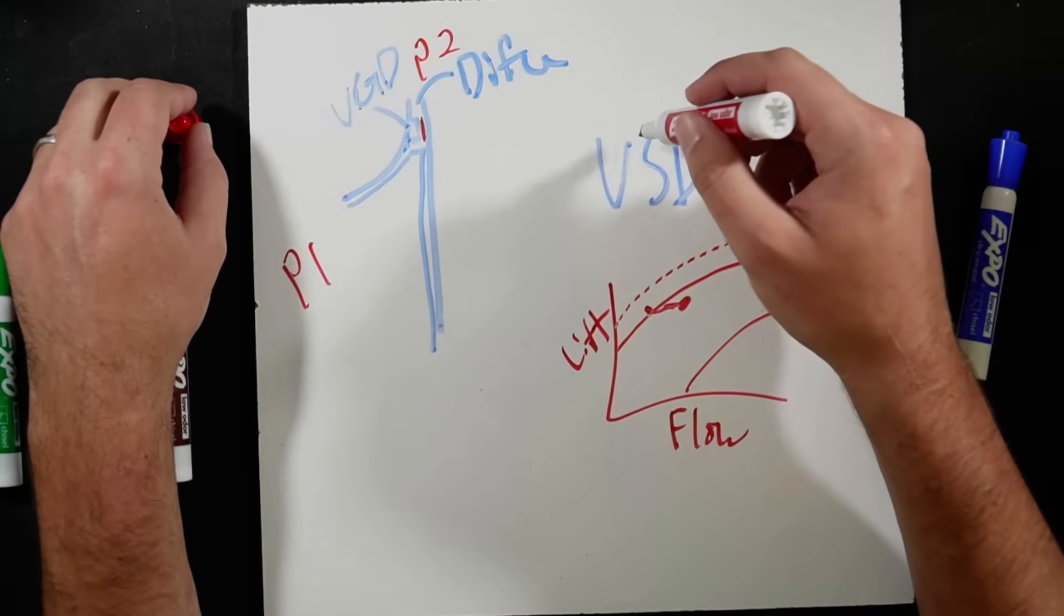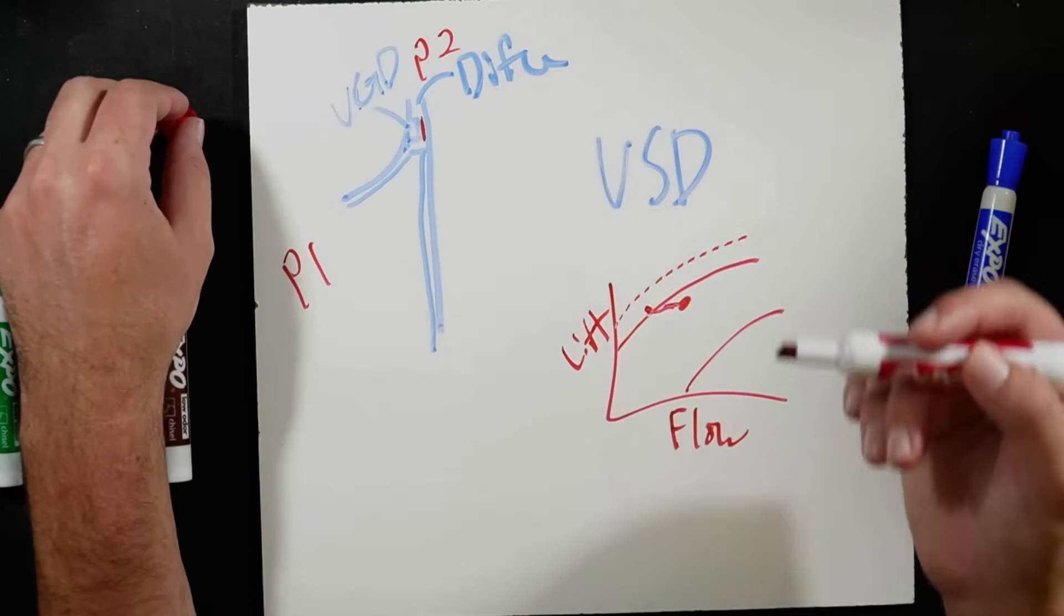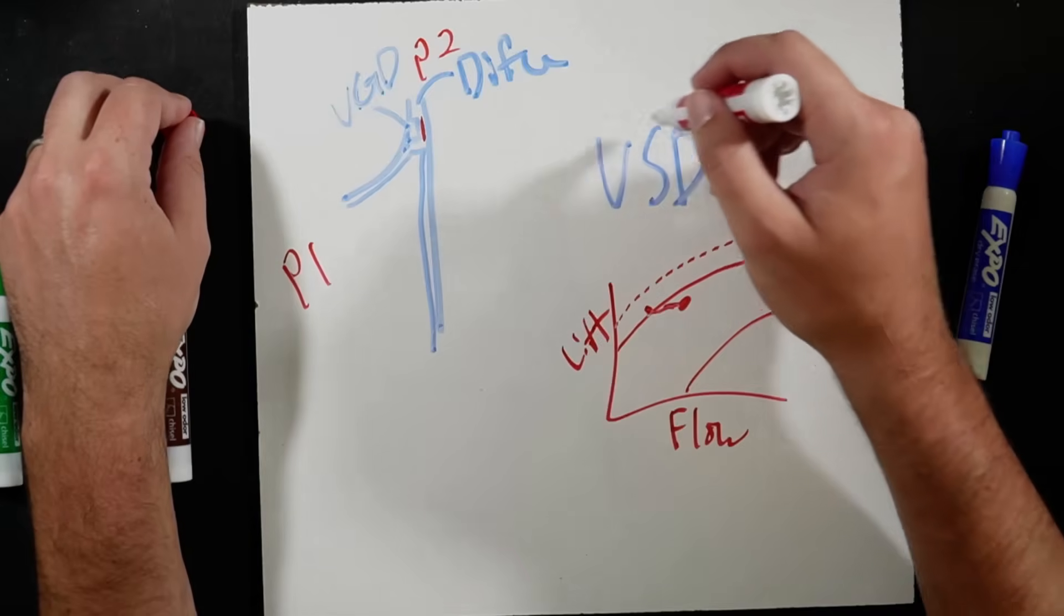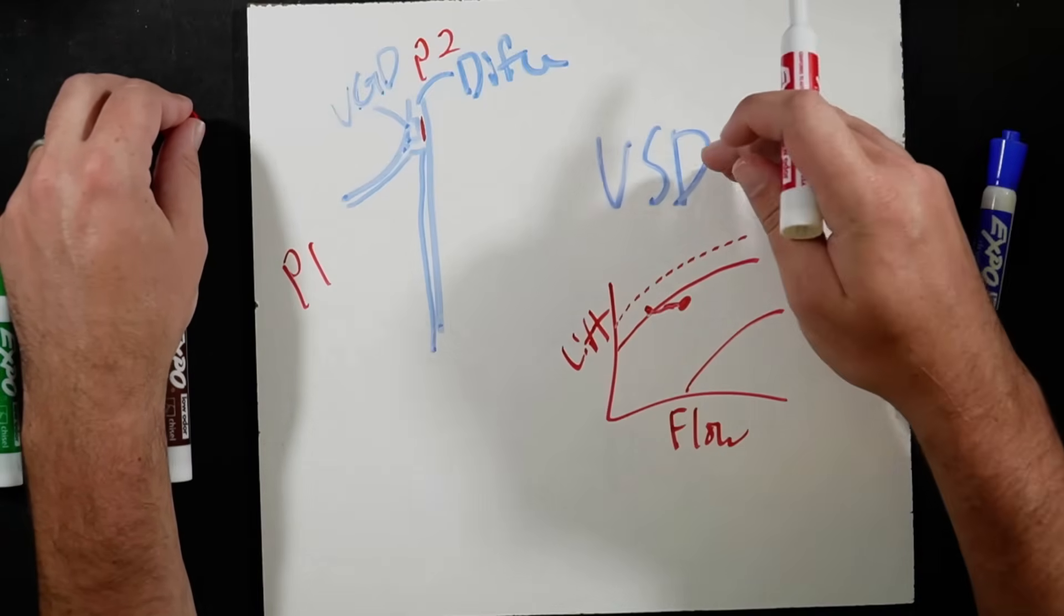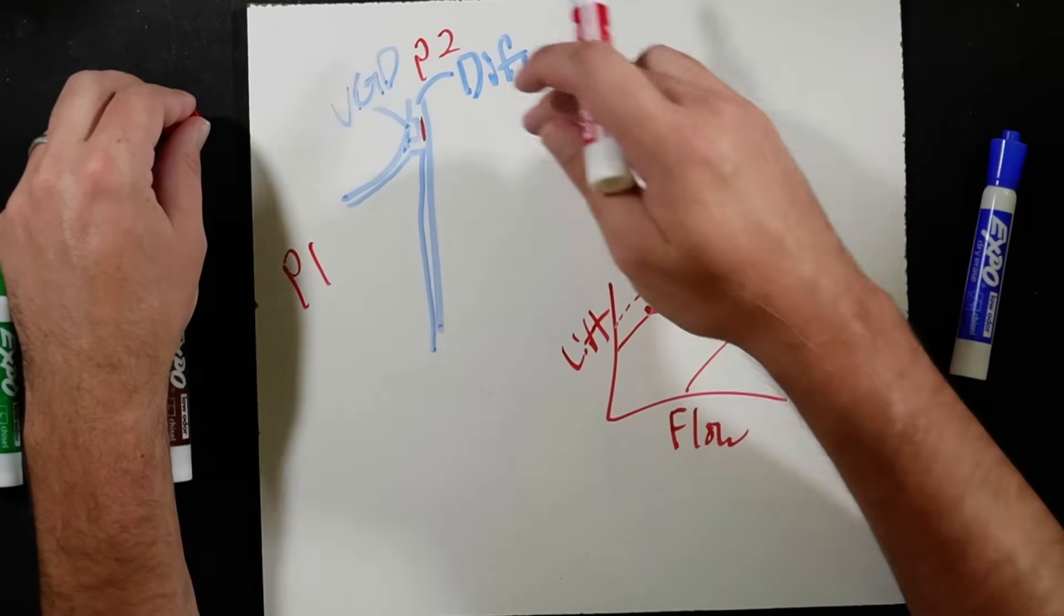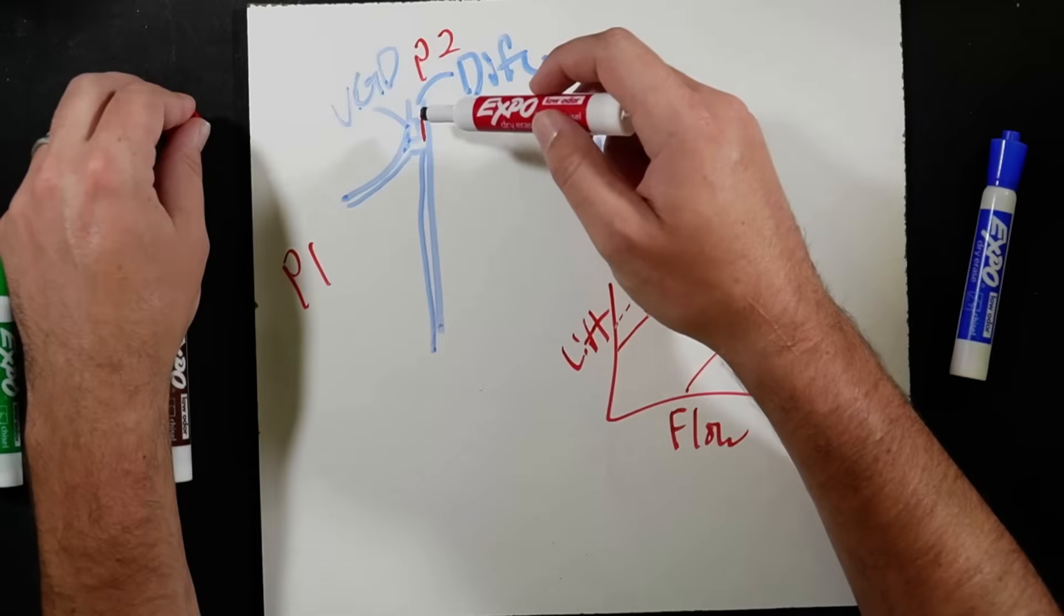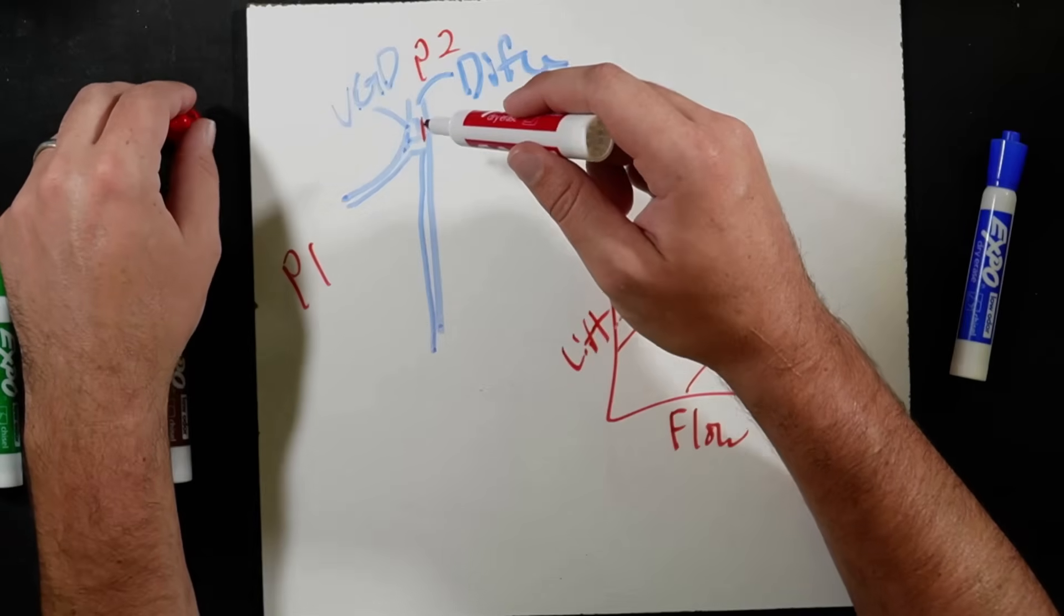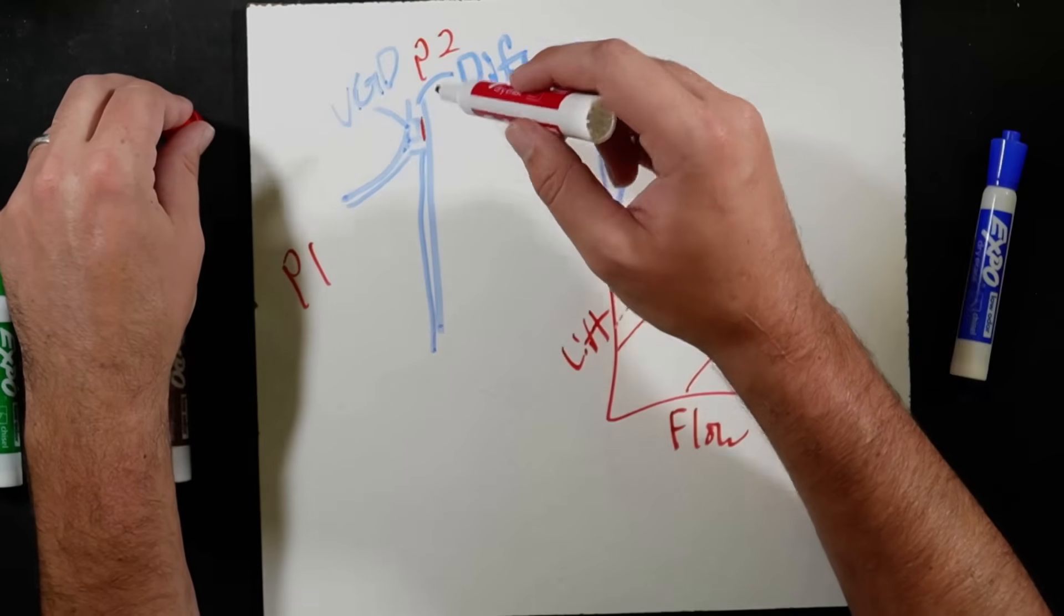So in the event that we're running at a part load, but we're not trying to fully unload, the VSD is still the primary load and unload mechanism, meaning speeding up or slowing down the compressor is still the main way we're controlling load. And the VGD at that point, its main job is to prevent the surge and stall condition by modulating this diffusion gap.